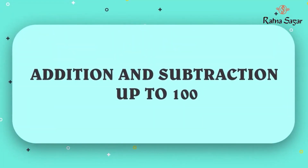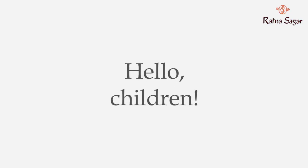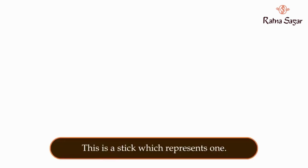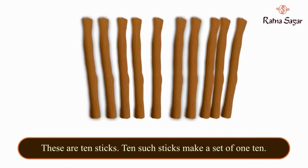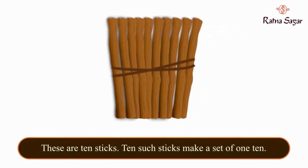Addition and subtraction up to 100. Hello children! In this video we are going to learn addition by arranging the numbers in ones and tens with the help of some objects. This is a stick which represents one. These are 10 sticks — 10 such sticks make a set of 10.